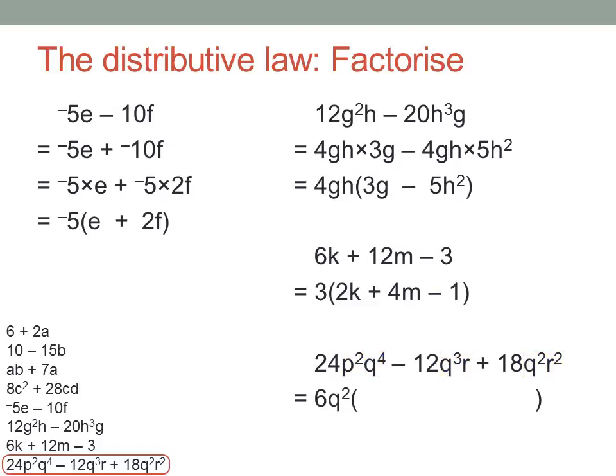Now, divide carefully. 4p squared q squared. We've divided by 6 and taken two of the q's outside the brackets. 2qr. There's one q left over. And 3r squared. The q's have gone outside the brackets.